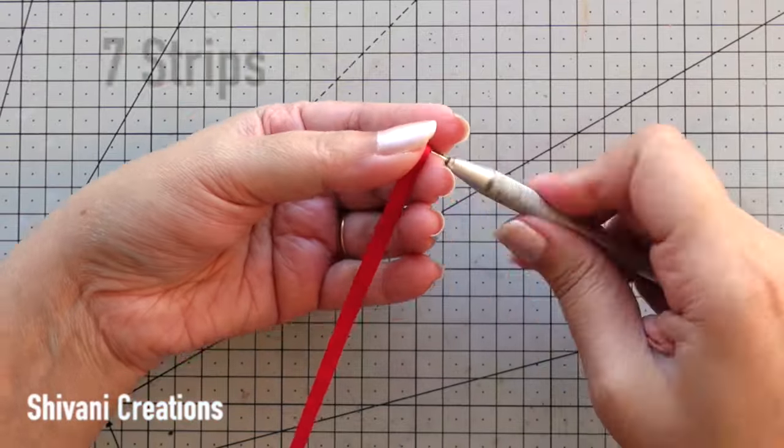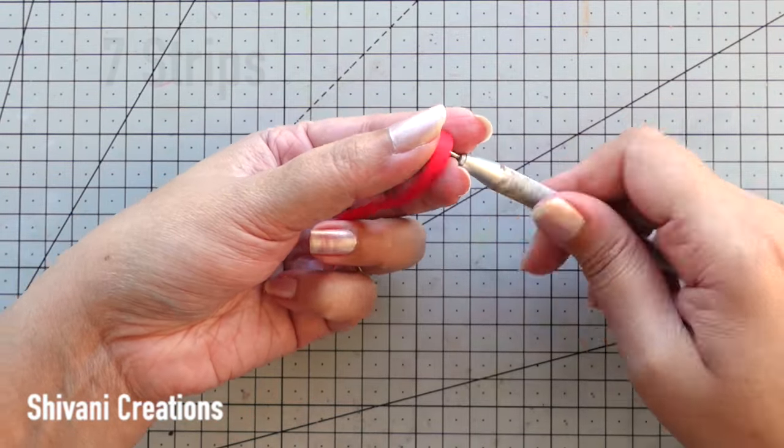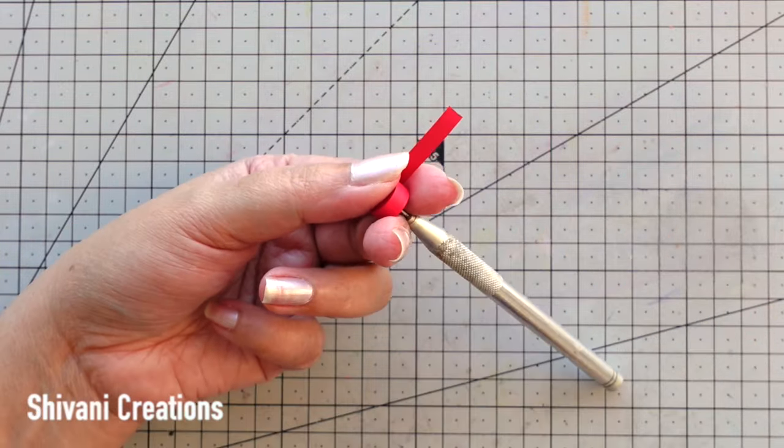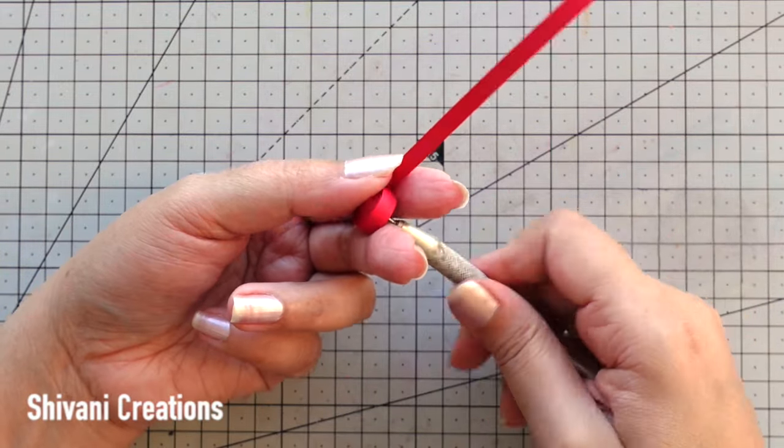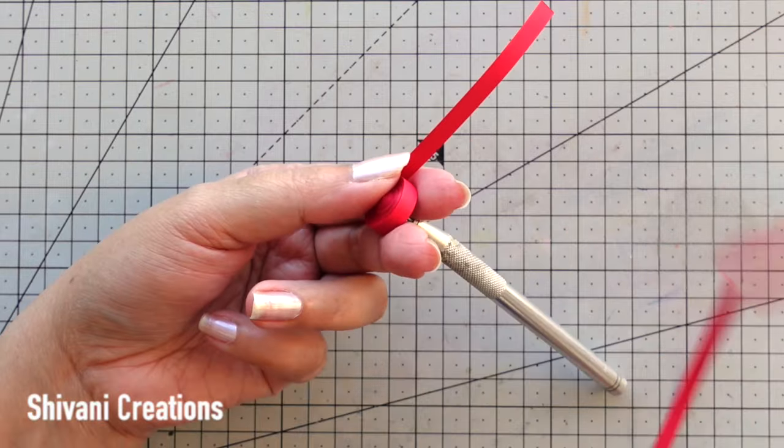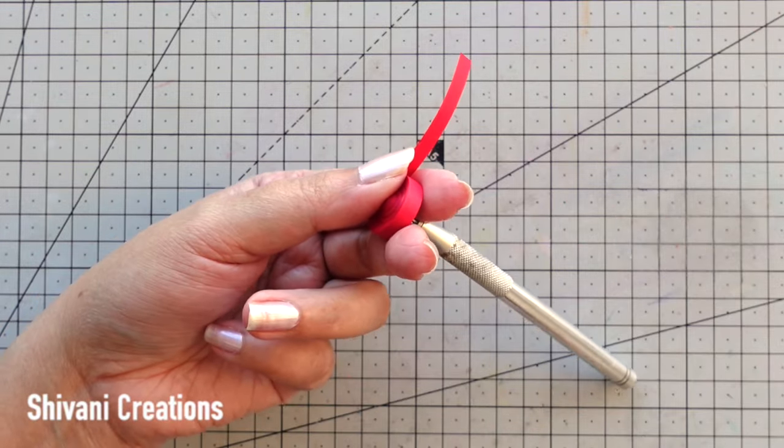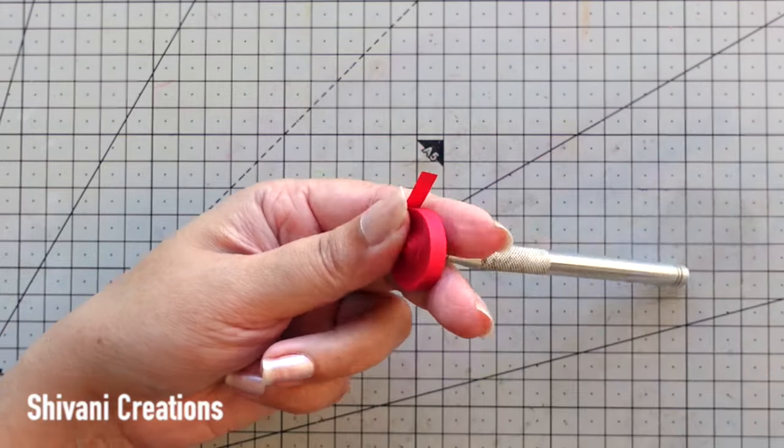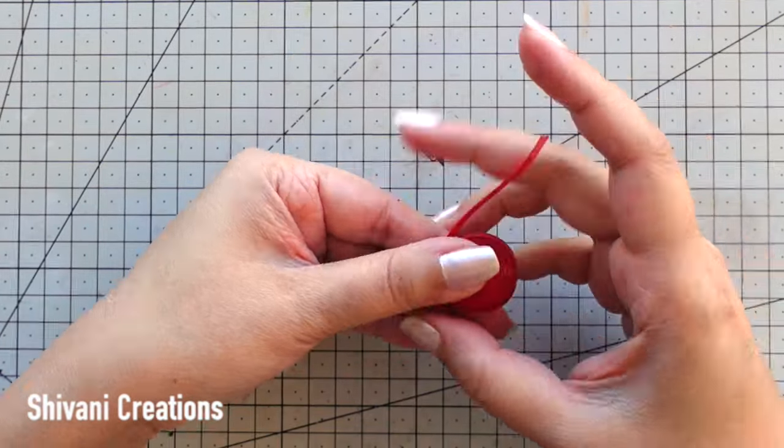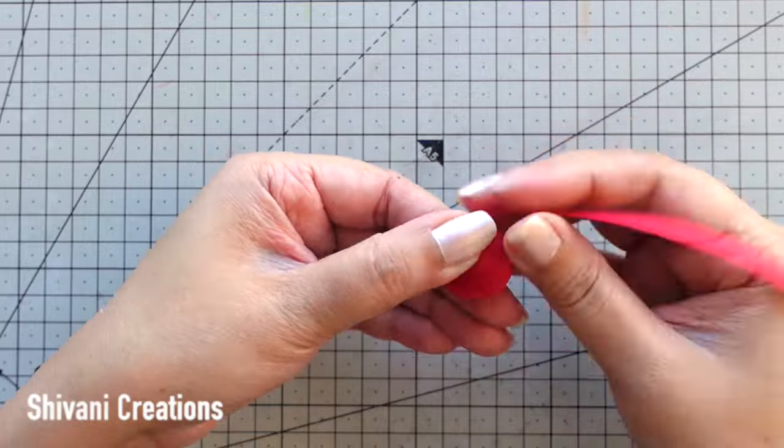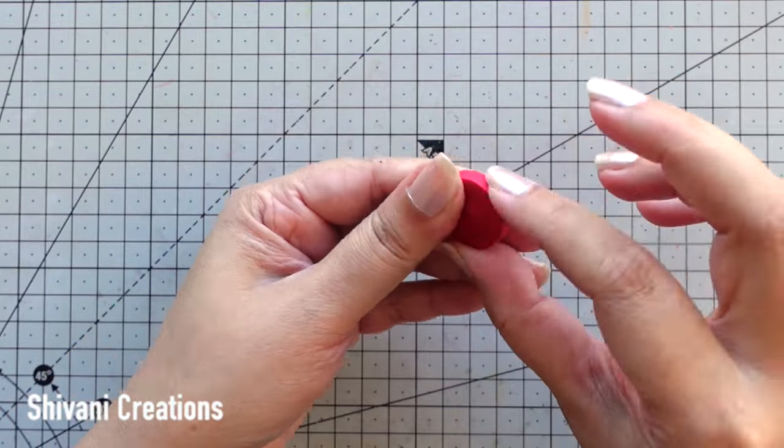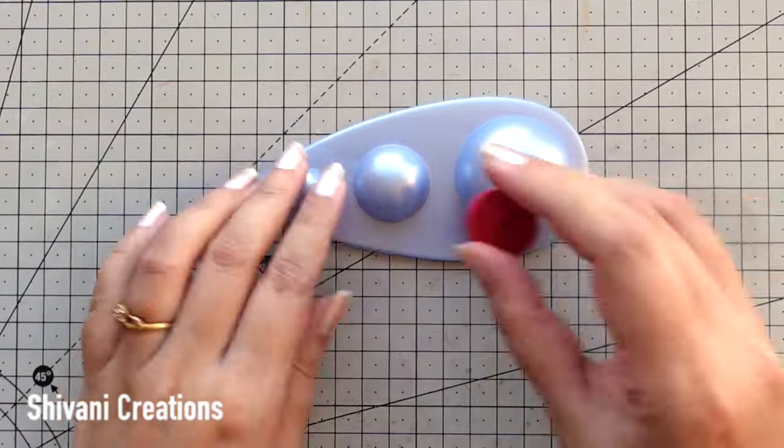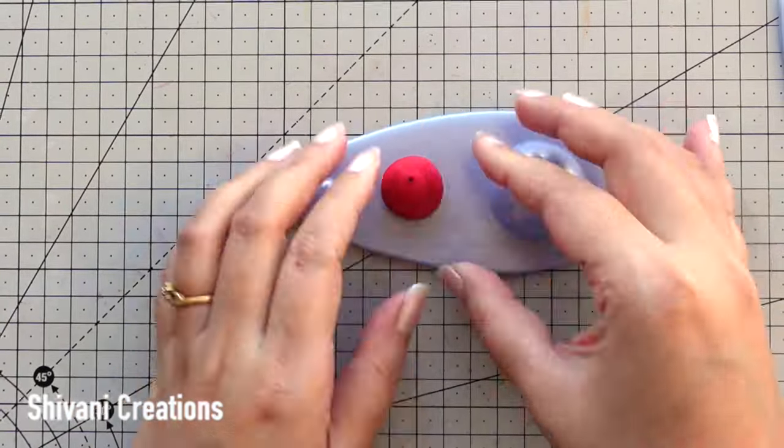Then I am proceeding for the dholak. For this I am taking 7 strips of red color in 5mm. You can directly use here dark brown color strips, but I don't have dark brown strip in 5mm. That's why I am using here red strips, and I will color it later. So I am making one big tight coil here by joining 7 strips, and then going to open it slowly and making the long dome shape.